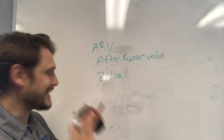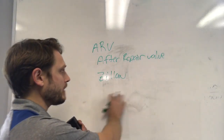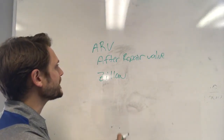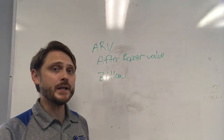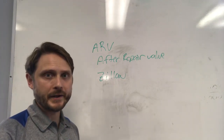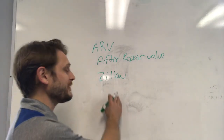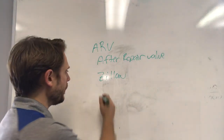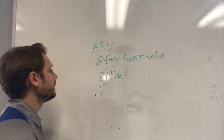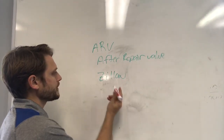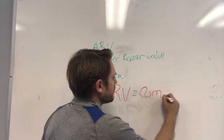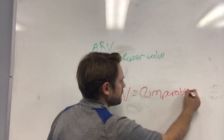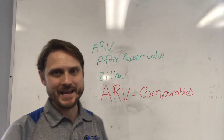We'll get a little bit deeper into what to do and how to figure out what they call comparables. But basically, to make this really simple: ARV equals comparables. They're one in the same. So if you're trying to get an ARV, you need to find comparables.